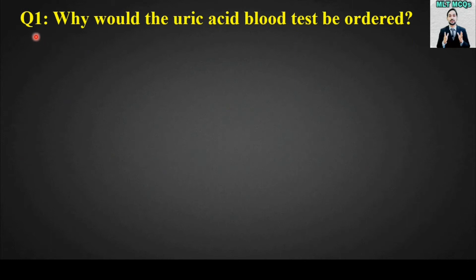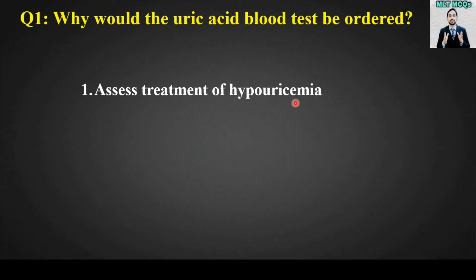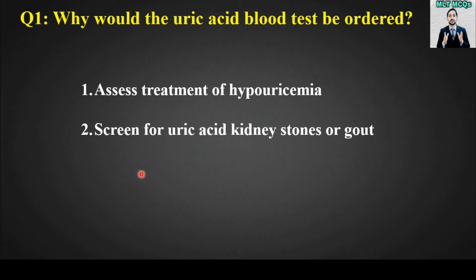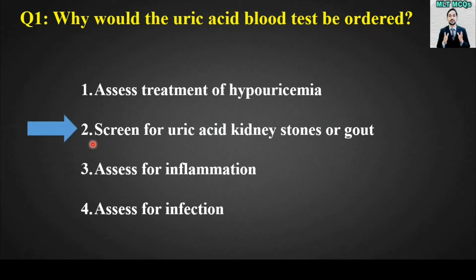MCQ number one: Why would the uric acid blood test be ordered? Options: assess treatment of hypouricemia; screen for uric acid kidney stones or gout; assess for inflammation; assess for infection. The right answer is option number two — the uric acid blood test is ordered to screen for uric acid kidney stones or gout.